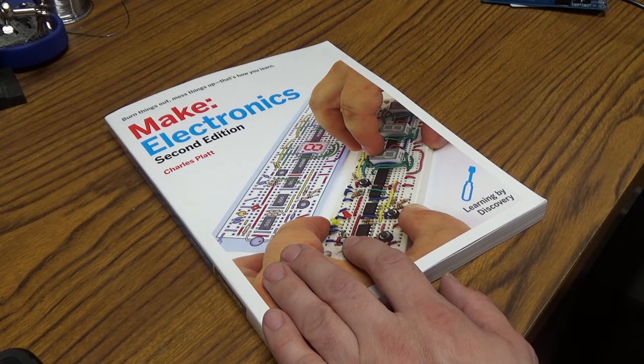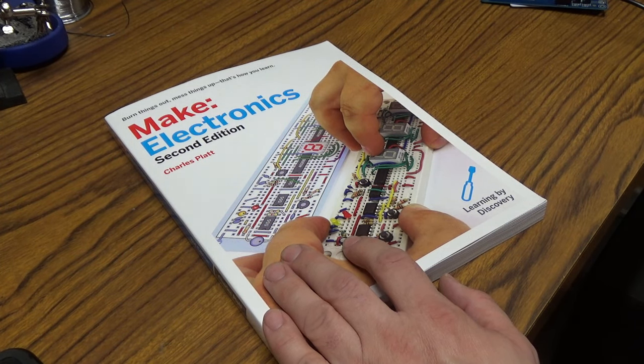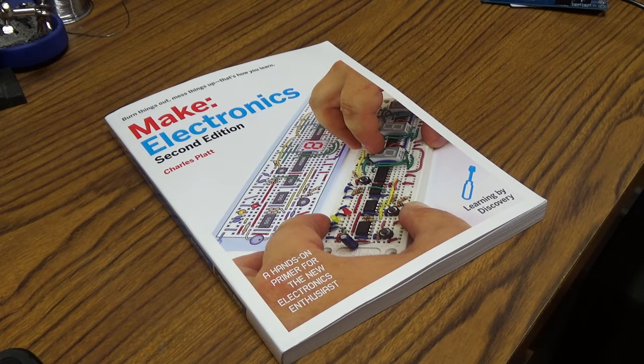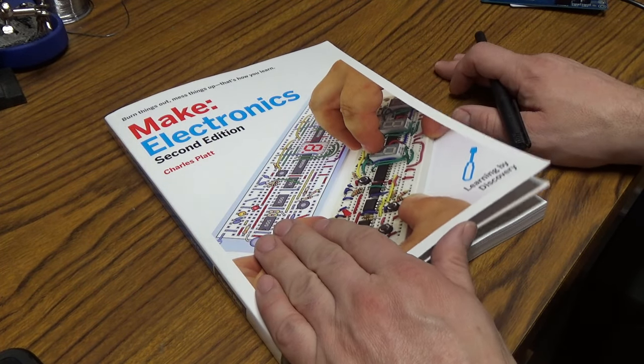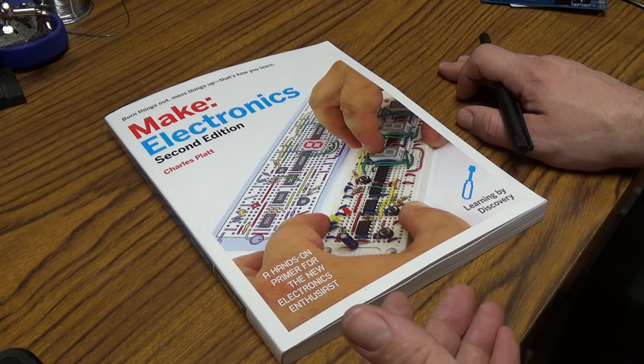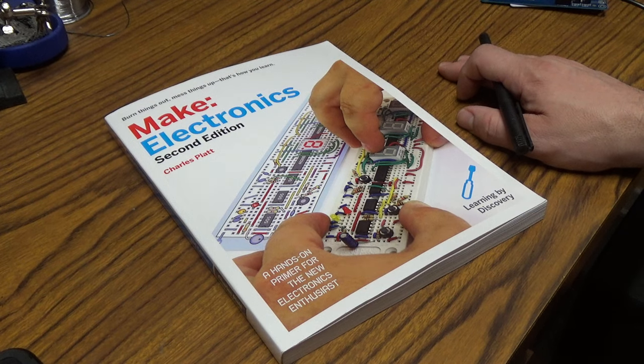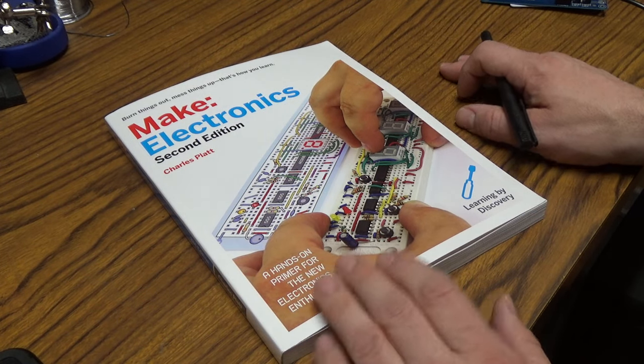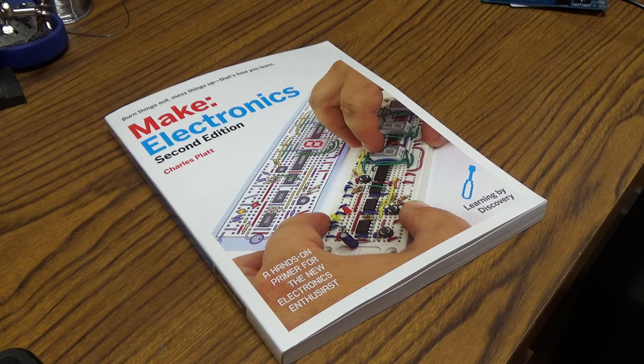This is the first book in a series by Charles. The next one is Make More Electronics. And then he also has an electronic component encyclopedia that I think is currently three volumes. And in those series of books they talk about various types of components and how they work and how you use them.